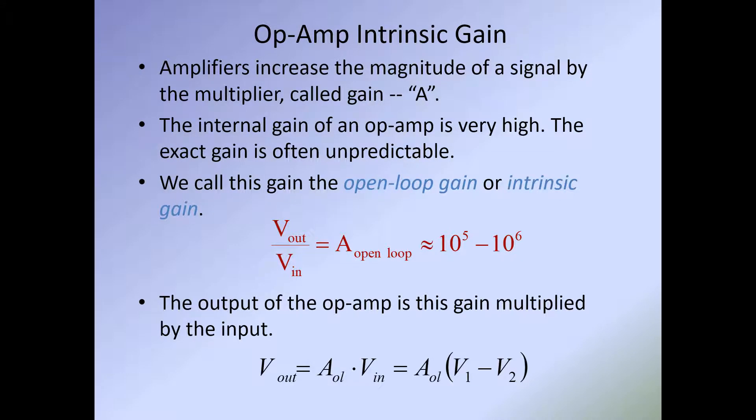Amplifiers increase the magnitude of a signal by the multiplier called gain, or A. The internal gain of the op amp is very high, and the exact gain is often unpredictable — this is usually an open-loop gain, meaning there is no feedback from the output back to the input. Our formula for this is Vout divided by Vin for gain, usually approximately equal to 10^5 to 10^6. The output of the op amp is the gain multiplied by the input — for example, if we have 1 millivolt coming in and a gain of 5, we have 5 millivolts on the output.